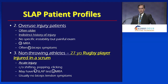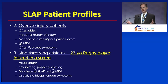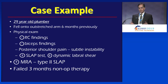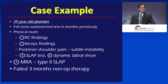Our guy has an acute injury. He's a non-throwing athlete. He complains of shifting, popping, and clicking, had a positive SLAP test, and likely a positive MRA, and probably no significant biceps tendon symptoms after his acute injury. I don't have rugby players in my practice, but I have plumbers. My 29-year-old plumber fell onto his outstretched arm, much like our rugby player probably did. He didn't have any symptoms before that injury but continued to have problems despite non-operative measures, with a positive SLAP test and a positive MRA.